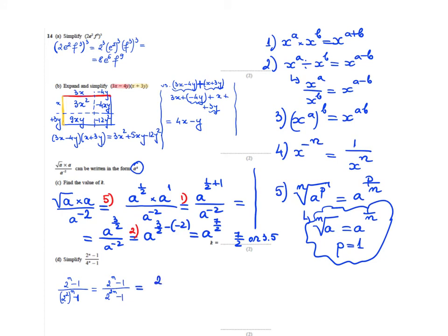I can apply rule number 3 again but backwards to write it (2^n)² - 1. I can factorize the bottom part into (2^n - 1)(2^n + 1).